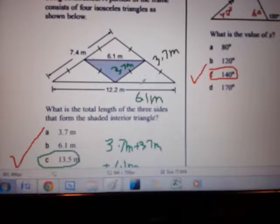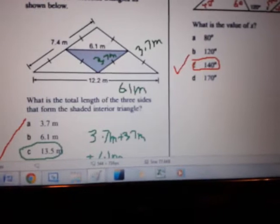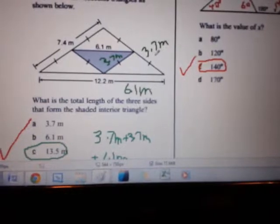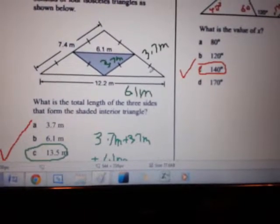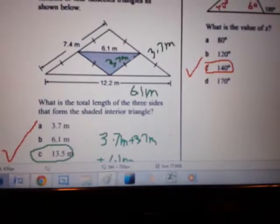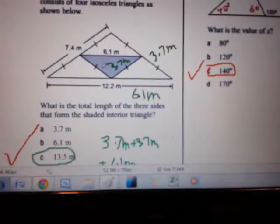So it's 6.1 meters for the base here. We know that 7.4 meters is the side length of this large triangle. Half of 7.4 meters is 3.7 meters, which is the side length for both sides of each of the four isosceles triangles. So we know that 3.7 meters is the side length of both sides for the shaded triangle, and 6.1 meters is the base of this shaded triangle.